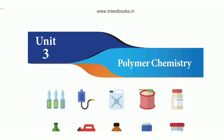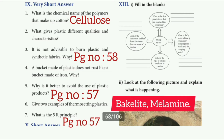In this video, this is a polymer chemistry lesson with question answers. Very short answer. First one: what is the chemical name of the polymer that makes up cotton? The answer is cellulose.